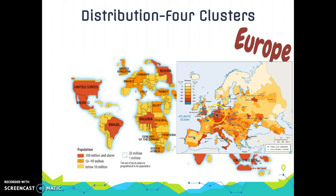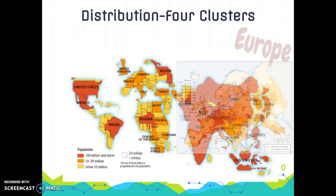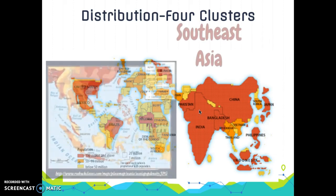Europe is our third population cluster. Three-fourths of inhabitants in Europe actually live in cities, and fewer than five percent are farmers — much different from East Asia and South Asia. Major populations are concentrated near rivers and coal fields, especially near Germany and France, as well as in historic capital cities.